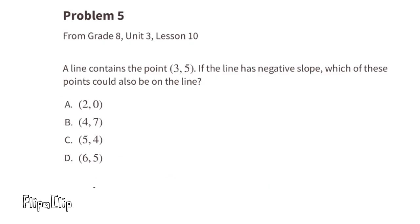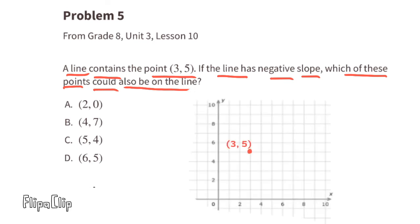Problem number five, from eighth grade Unit 3 Lesson 10: a line contains the point (3, 5). If the line has a negative slope, which of these points could also be on the line? I went ahead and put the point (3, 5) on a graph. Now, one at a time, we can put the other points on the graph and see if the line forms a negative slope. Let's try point A: (2, 0).